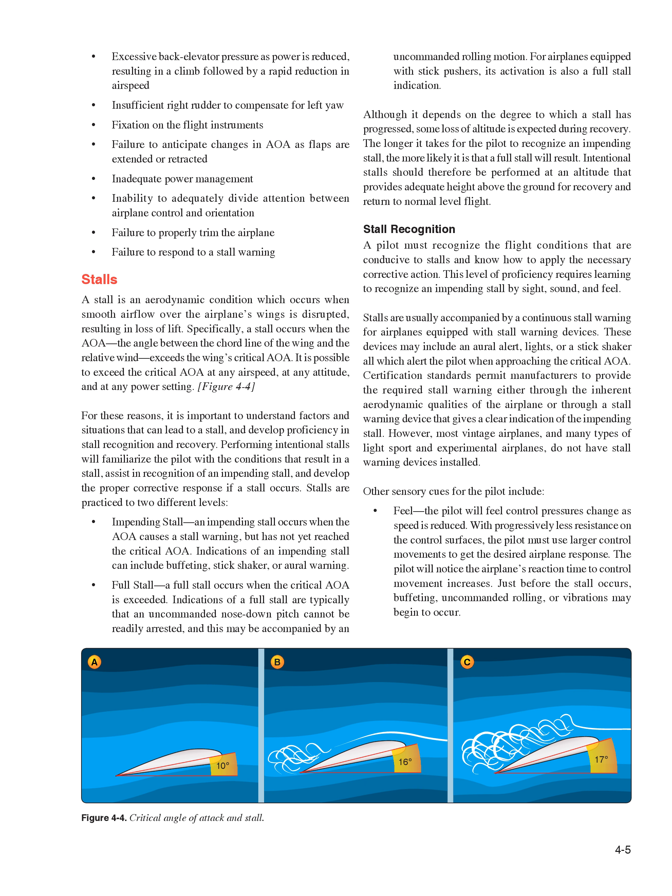A stall is an aerodynamic condition which occurs when smooth airflow over the airplane's wings is disrupted, resulting in loss of lift. Specifically, a stall occurs when the AOA — the angle between the chord line of the wing and the relative wind — exceeds the wing's critical AOA. It is possible to exceed the critical AOA at any airspeed, at any attitude, and at any power setting. Performing intentional stalls will familiarize the pilot with the conditions that result in a stall, assist in recognition of an impending stall, and develop the proper corrective response if a stall occurs.